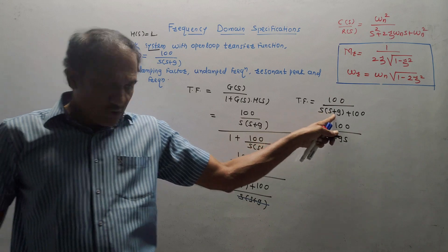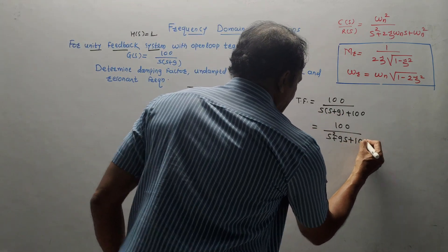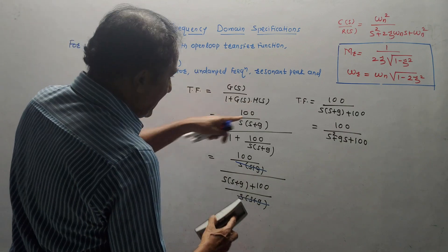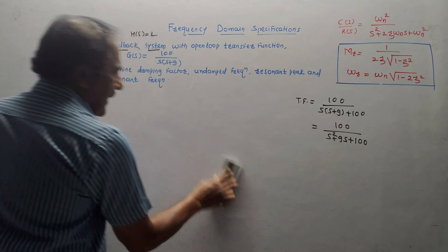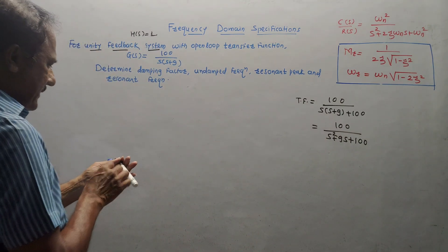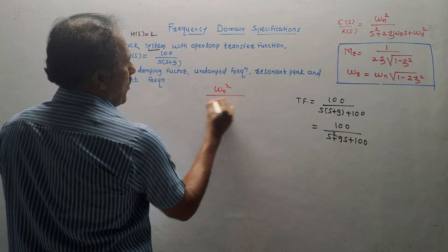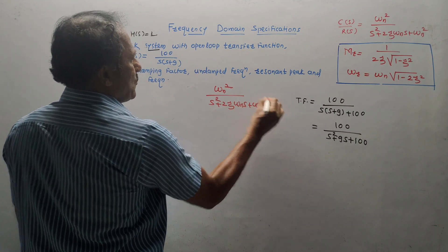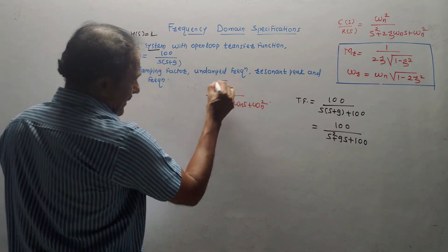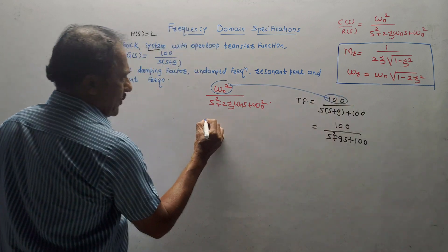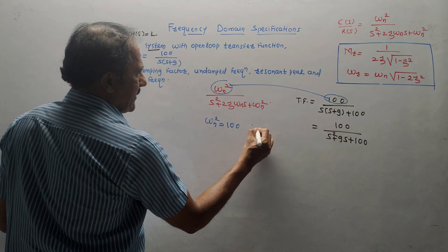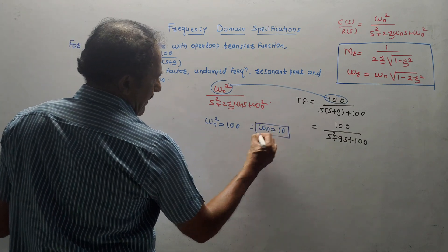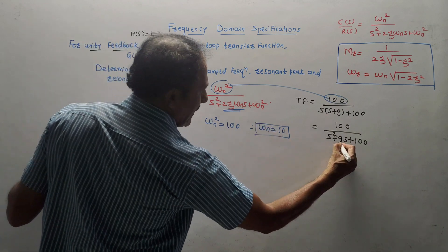Now compare this obtained transfer function with the standard formula: ωn² upon s² + 2ζωns + ωn². The numerator gives ωn² = 100, therefore ωn = 10 radians per second. For zeta: the coefficient of s is 9, and 2ζωn = 9. Substituting ωn = 10: 2ζ × 10 = 9.